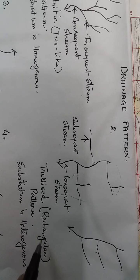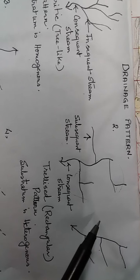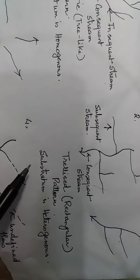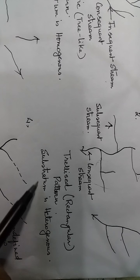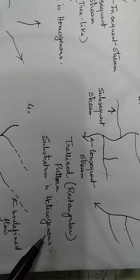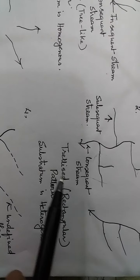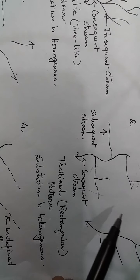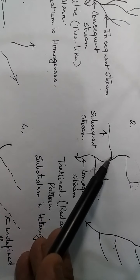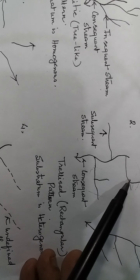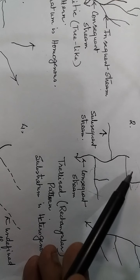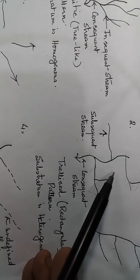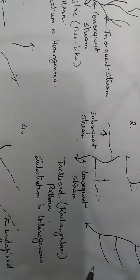This type of pattern is found in areas where the substratum is heterogeneous — meaning there are alternate hard and soft rocks. Where streams are flowing, those areas have soft rocks; where there are no streams, those are areas of hard rocks.